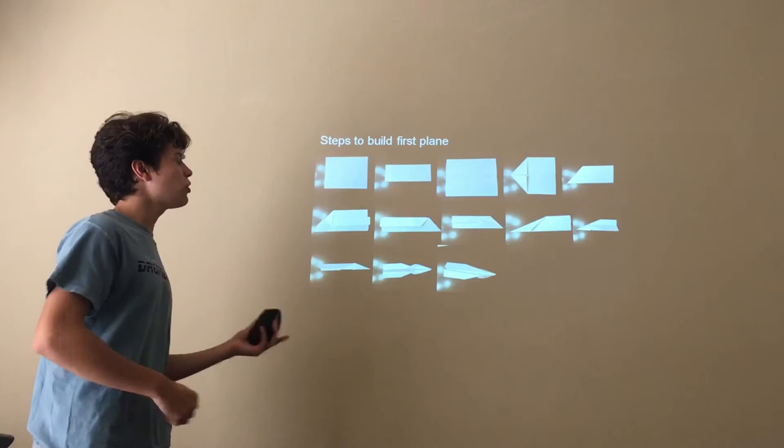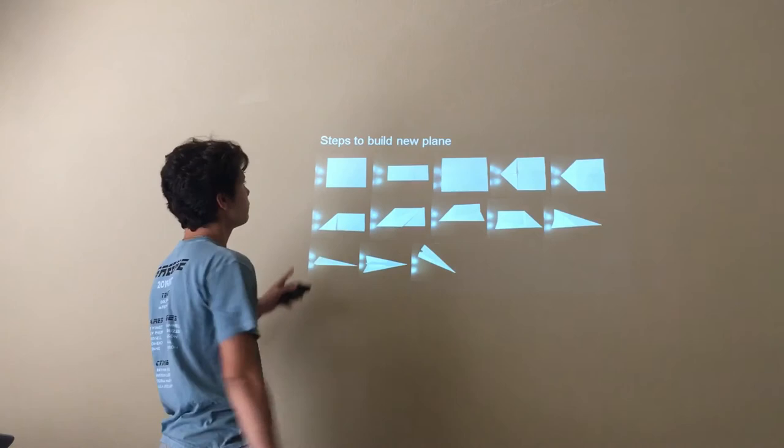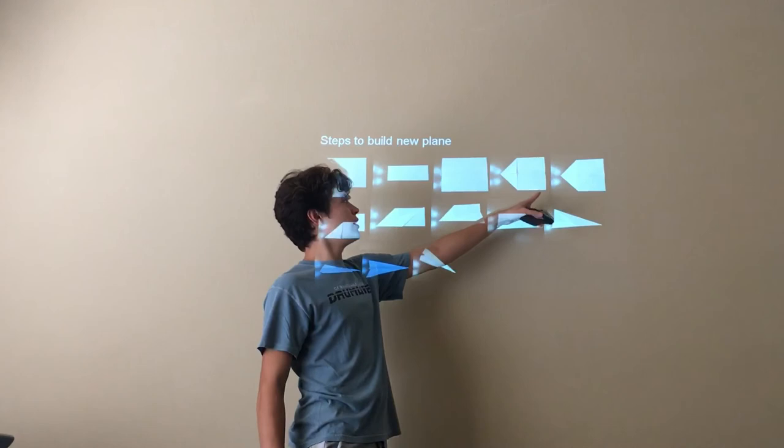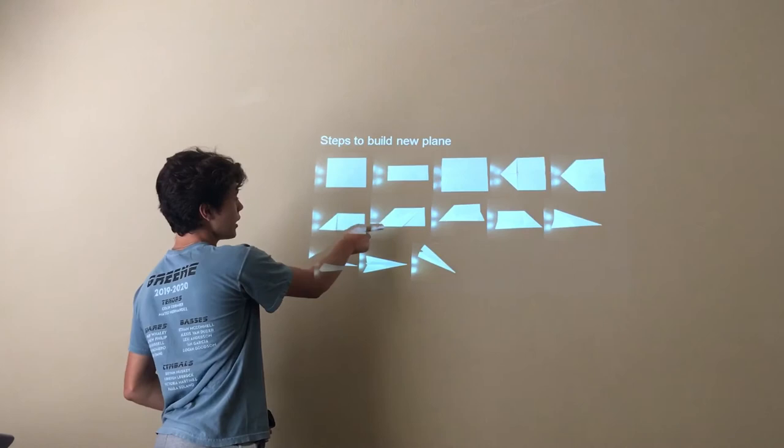For my next plane, I started off the same—same four steps, folding paper in half until it meets the middle. And then this step was vital: instead of folding it in half to where the flaps were inside, I folded it in half to where these flaps were outside so I could get a better grip at the bottom.